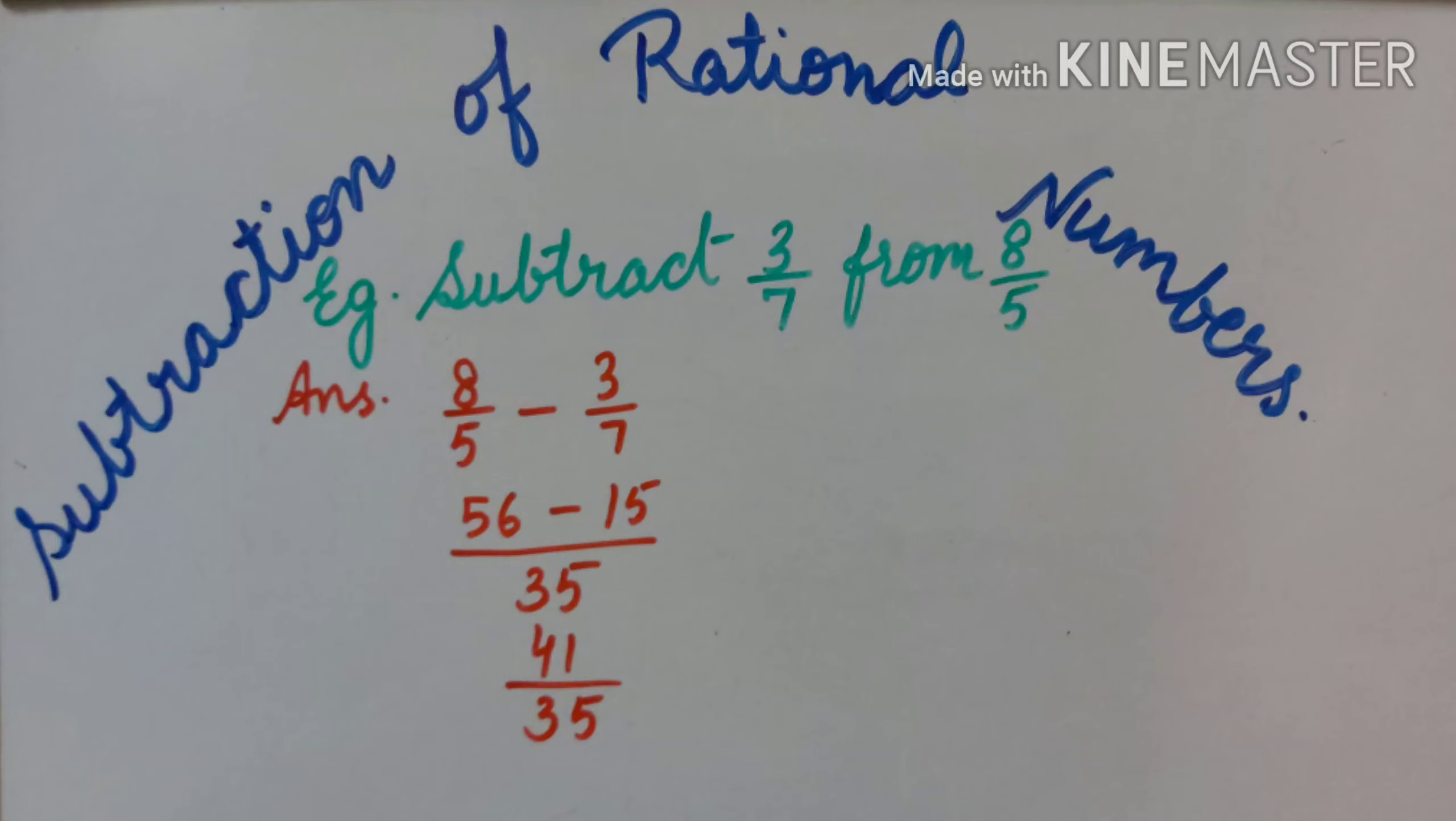For subtraction of rational numbers, first of all we will arrange. For example, the question is subtract 3 upon 7 from 8 upon 5. So we will arrange 8 upon 5 minus 3 upon 7, and then solve same as addition. So LCM is 35, and operating each rational number, we get 56 minus 15 upon 35. So the answer is 41 upon 35.